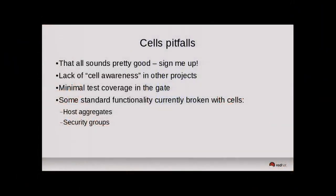In terms of pitfalls, cells is really a very compute-centric solution. Most of the other services have only vague cell awareness, if any at all. There are some tricks you can use to push some components from other services down to understand cells, but it's very hit and miss — no consistent approach across other services. There's also fairly minimal test coverage in the gate, which needs improvement. Some standard functionality you wouldn't even think about — particularly host aggregates and security groups — don't actually work at the moment, because cells is almost bolted on to Nova in a way that requires additional paths to support these functions.